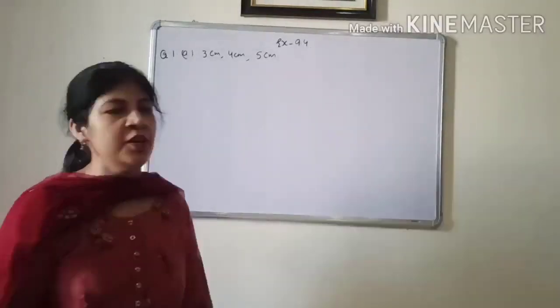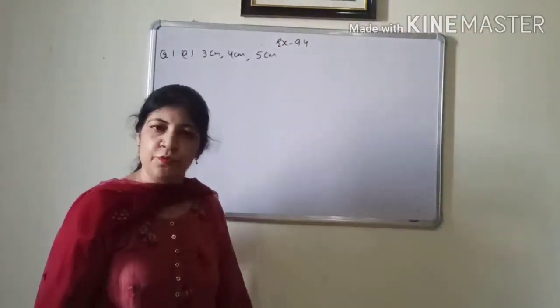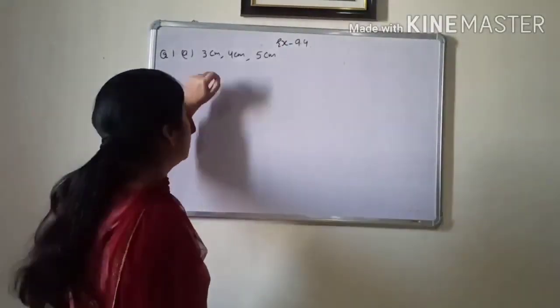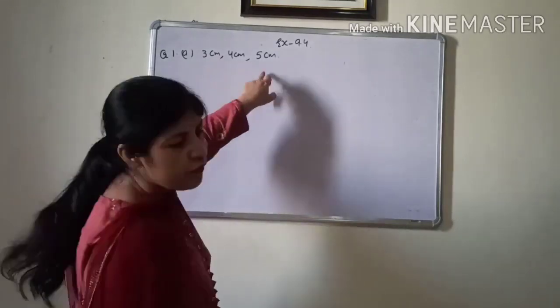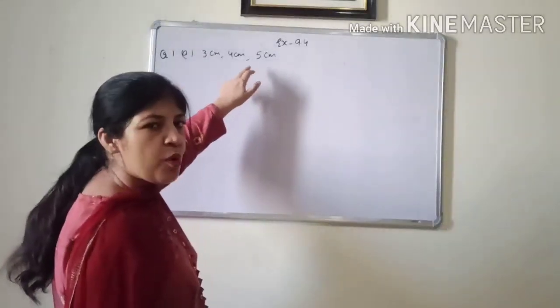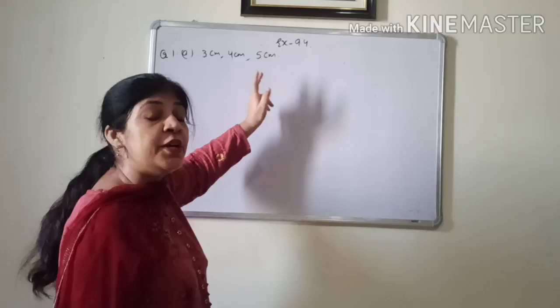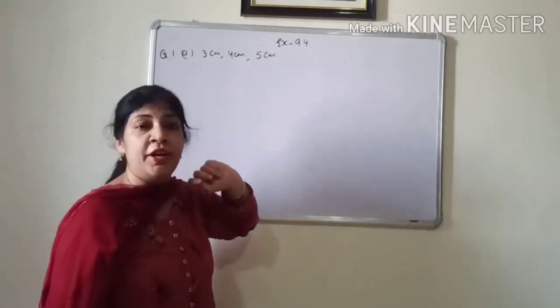Dear students, we are going to start exercise 9.4. First question, can these sets of numbers be the possible length of the sides of a right angle triangle?